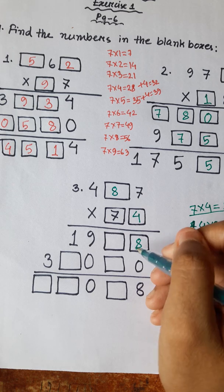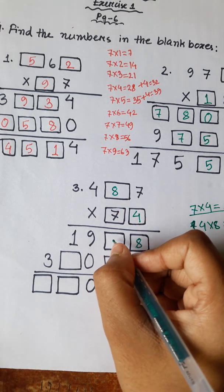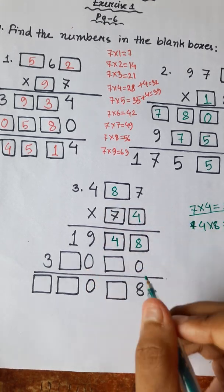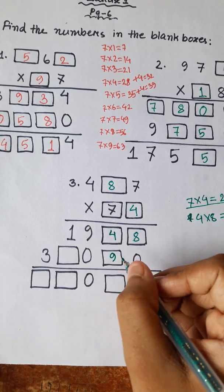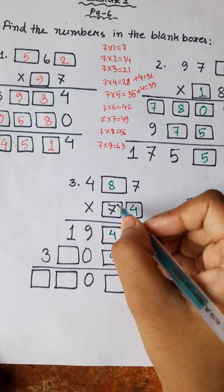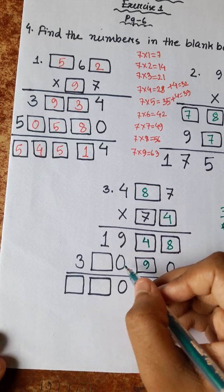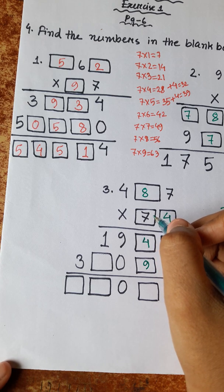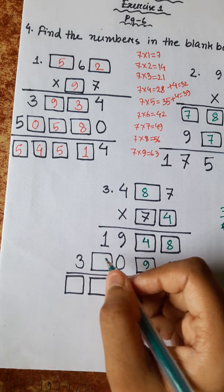Now the math is very easy. 7 times 4 is 28, carry 2. 4 times 8 is 32, plus 2 is 34. 3, 4 times 4 is 16, plus 3 is 19. 7 times 7 is 49. 7 times 8 is 56, plus 4 is 60, carry 6. 7 times 4 is 28, plus 6: 28, 29, 30, 31, 32, 33, 34.